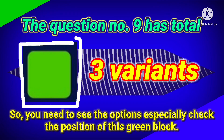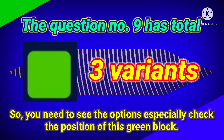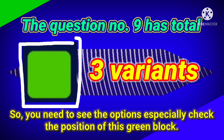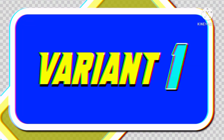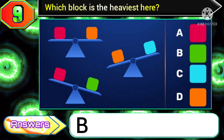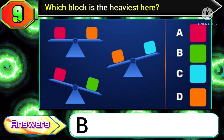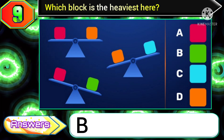Question number 9 has a total of 3 variants. You need to see the options and especially check the position of the green block. In variant 1 of this question, if you get the green block at the position in option B, then you need to choose option B.